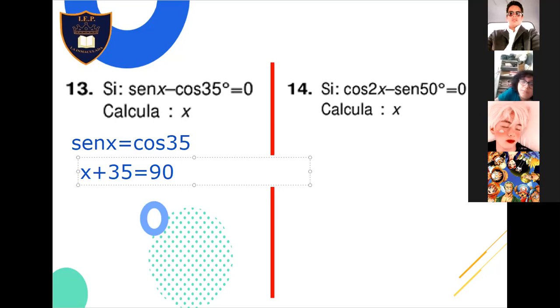¿Sí quedó claro eso del seno de X igual al coseno de 35? Sí. ¿Los demás? Me imagino que interpretando, está claro. Muy bien. Ya, listo. X es igual a 90 menos 35. Eso será 55. Eso es lo que me piden, el valor de X.